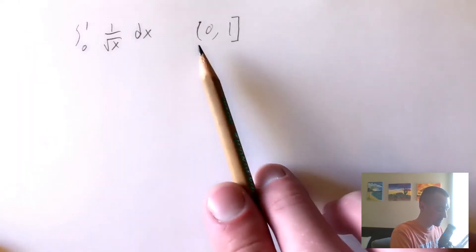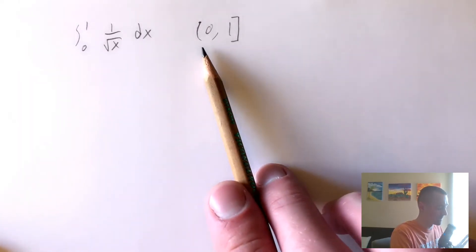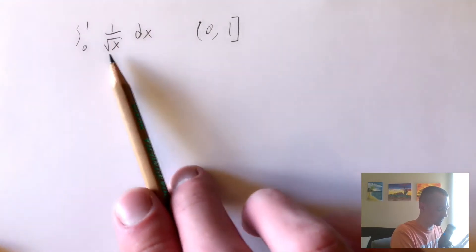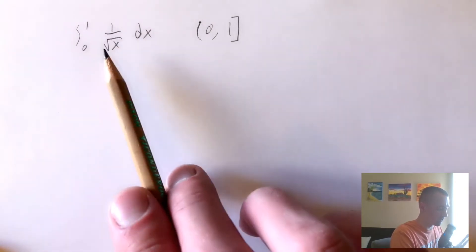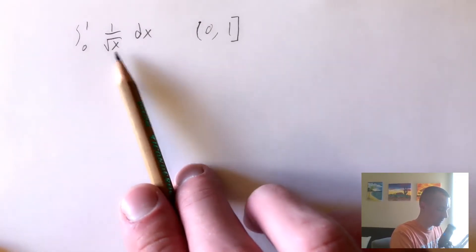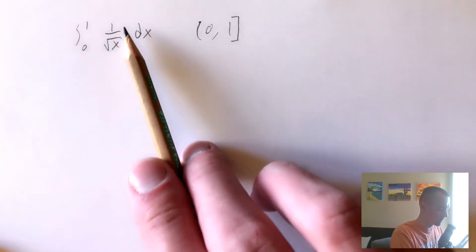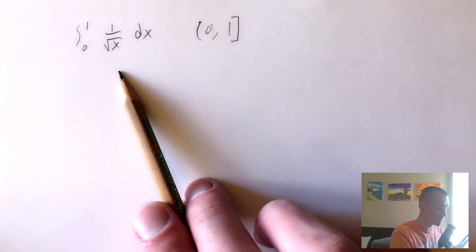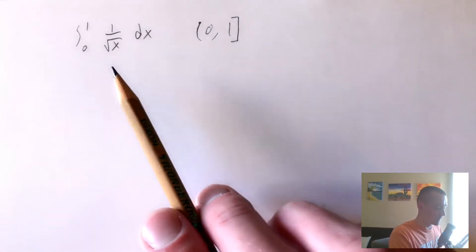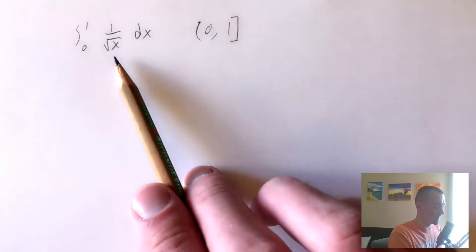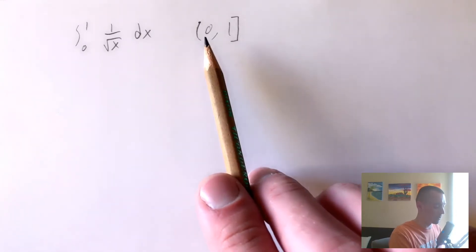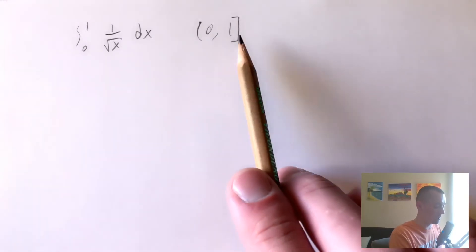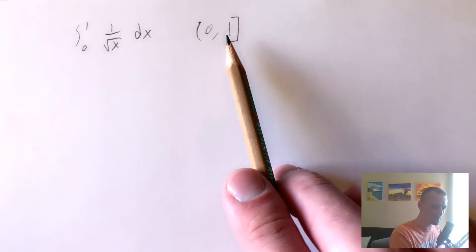This function is not continuous at x equals 0 because if you plug in 0 for x you get 1 over 0, which is undefined — you can't do that. So as a result, this function is continuous from 0 to 1, not including 0 but including 1.